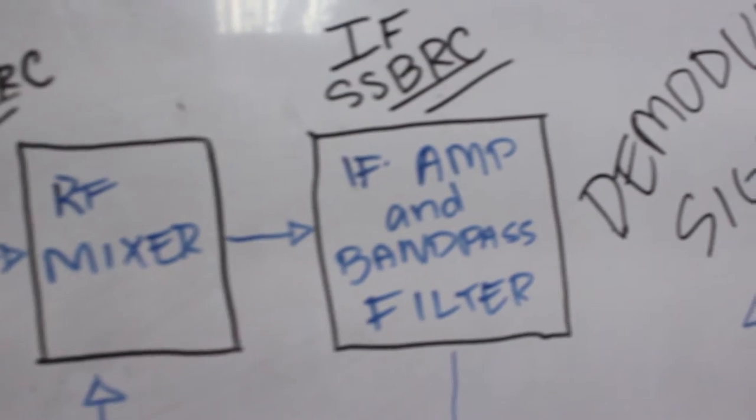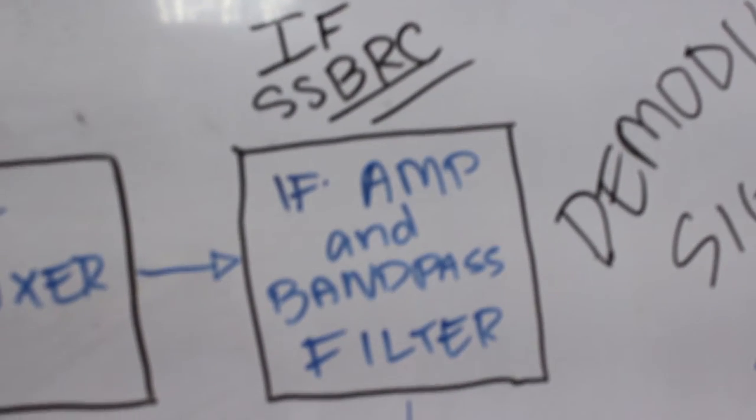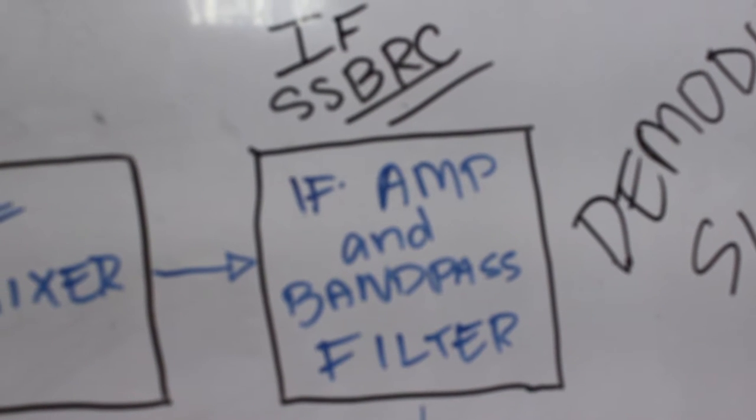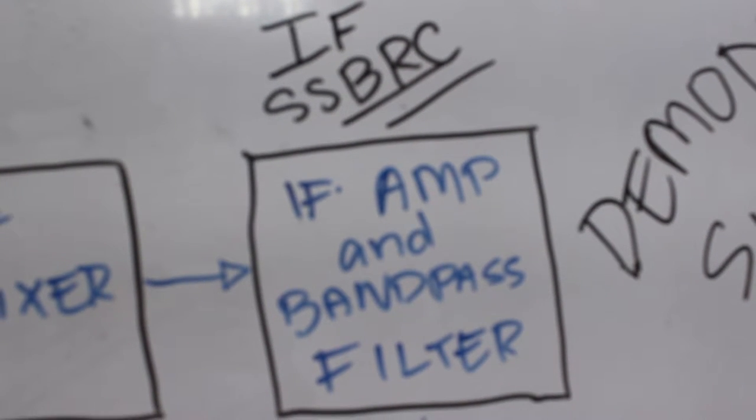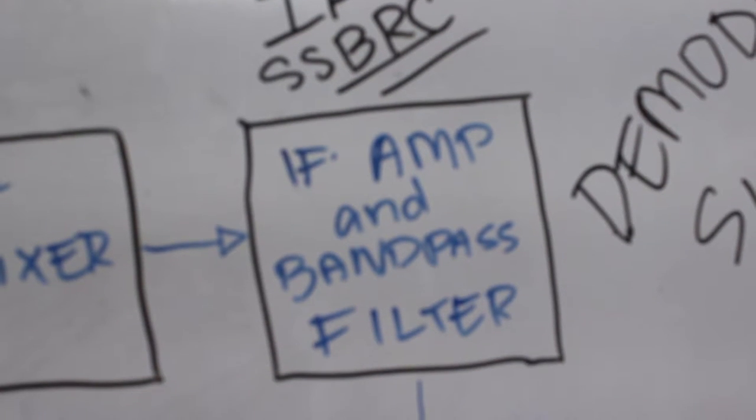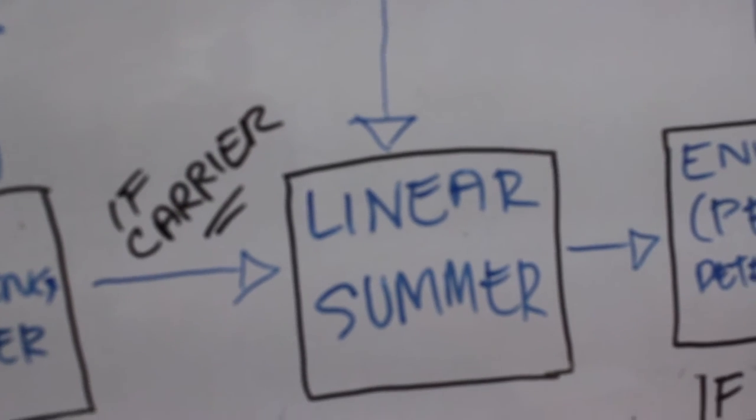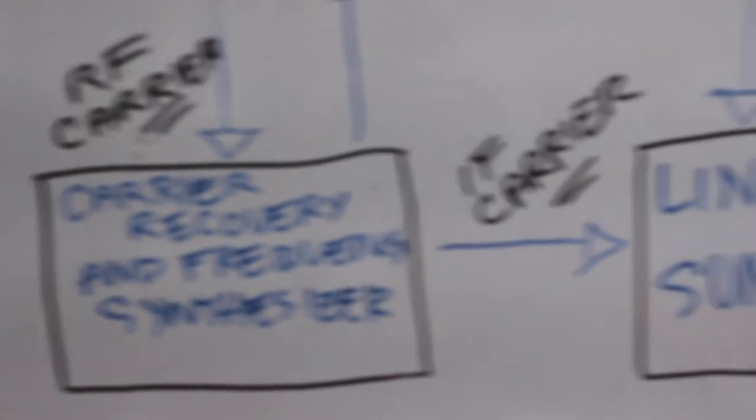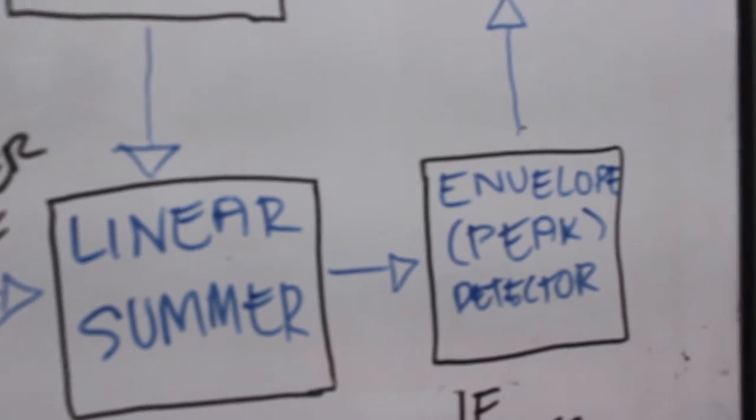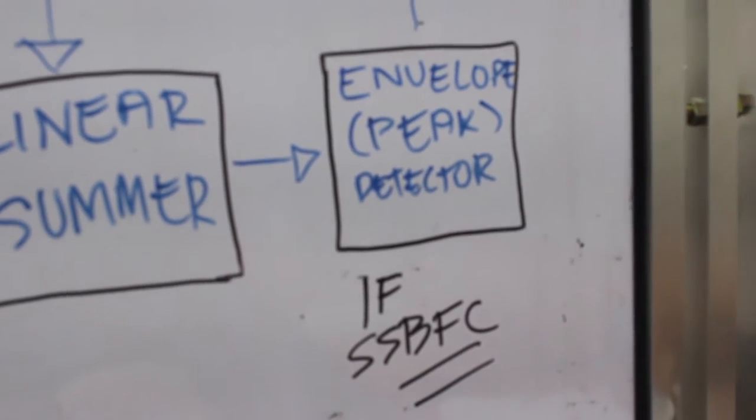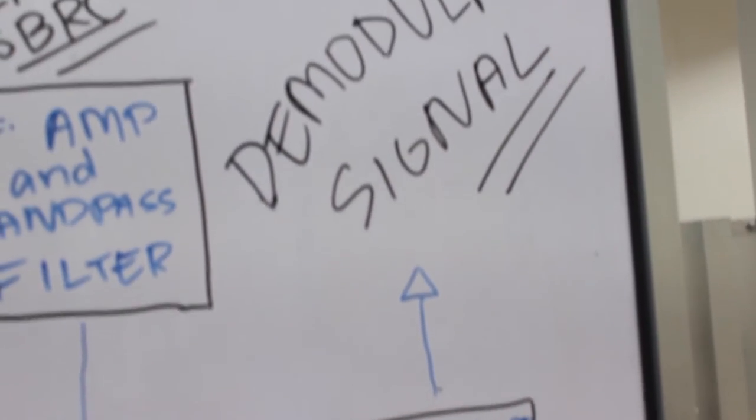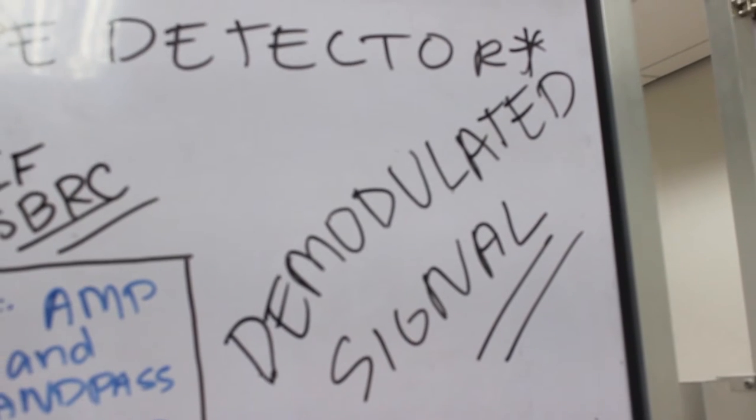This signal now becomes an intermediate frequency single sideband reduced carrier. The IF amplifier and bandpass filter amplifies and selects the intermediate frequency. The output signal is combined with the RF carrier. The signal becomes an intermediate frequency single sideband full carrier which is the input to the envelope detector.